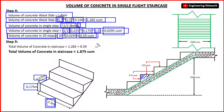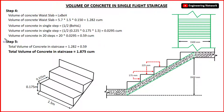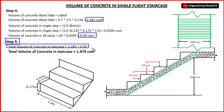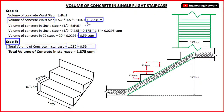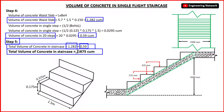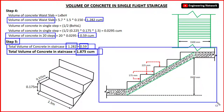Finally, in step number 5, I will add both the volume of concrete in the waist slab and the volume of concrete in the 20 steps. The total volume of concrete in staircase equals 1.282 m³ plus 0.59 m³, and the total volume of concrete will become 1.875 m³. So in this staircase, the total amount of concrete that will be used is 1.875 m³. This is how you can easily calculate the volume of concrete in any type of staircase.